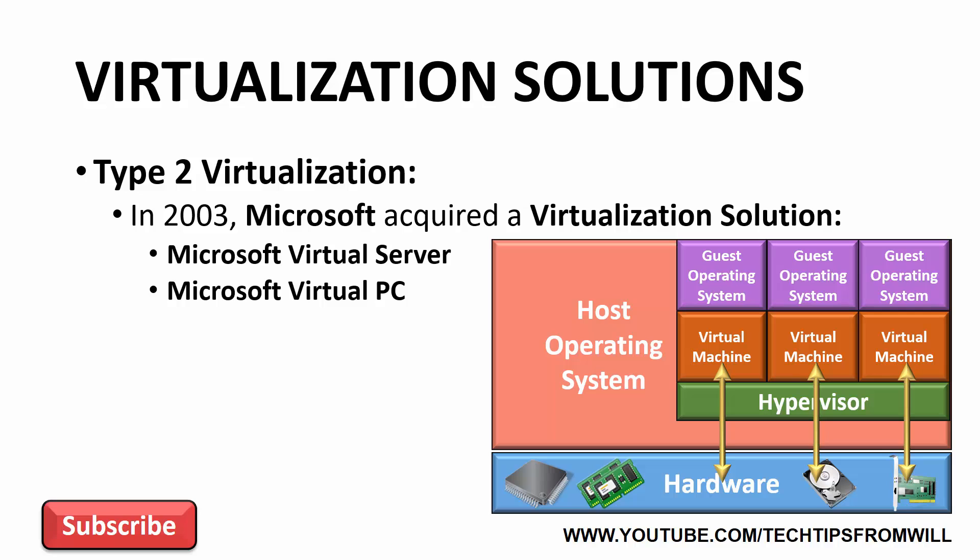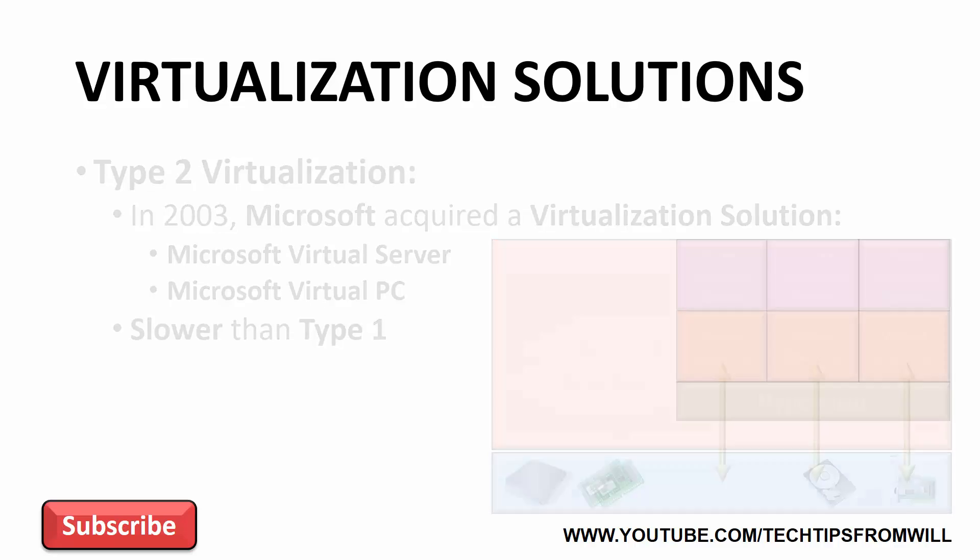However, in order to access the hardware in the hardware layer, the guest operating system must first go through the hypervisor and then through the host operating system. Although easy to set up and configure, the act of having to pass through two layers made Type 2 virtualization solutions slower than Type 1 solutions. As such, Type 2 virtualization is not recommended for a production network.